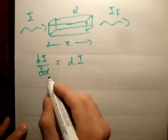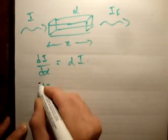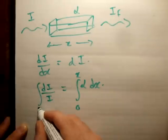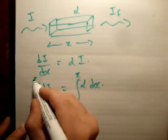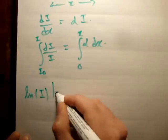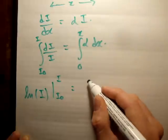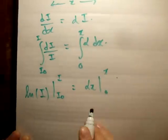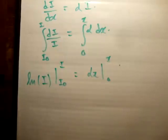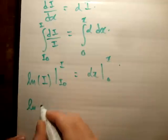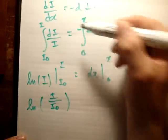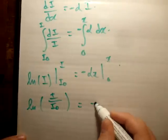I'll very quickly show you how to integrate this. You're going to have dI over I, integrate that, equals alpha dx. Integrate that. This is between 0 and x, this is between I0 and I. This is an integral that's very straightforward. You're going to get the logarithm of I evaluated between I0 and I equals alpha x evaluated between 0 and x. There should be a negative sign up here, by the way, because this is loss or attenuation.